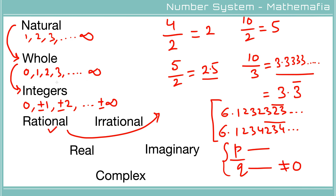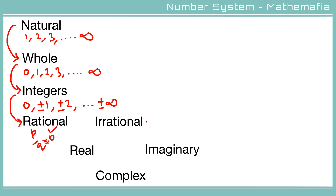All integers are also rational numbers. For example, 4 can be written as 4/1, and minus 3 can be written as minus 3/1. So every integer is also a rational number. Rational numbers are of the form p/q where q is not equal to zero and both p and q are integers.